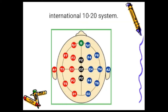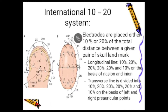Recording is made by the international 10-20 system, where electrodes are placed at either 10% or 20% of the total distance between a given pair of skull landmarks. For example, on a longitudinal line between nasion and inion, electrodes are placed at 10, 20, 20, 20, 20, and 10 percent. If the nasion-inion distance is 50 cm, the first electrode is placed 5 cm from nasion. In the transverse line, spacing is similarly divided by 10-20-20-20-20-10 based on left and right pre-auricular points.